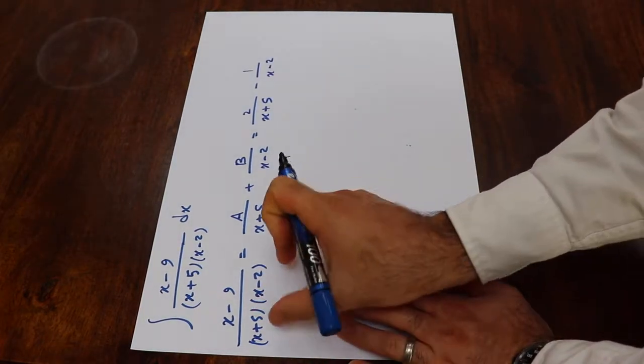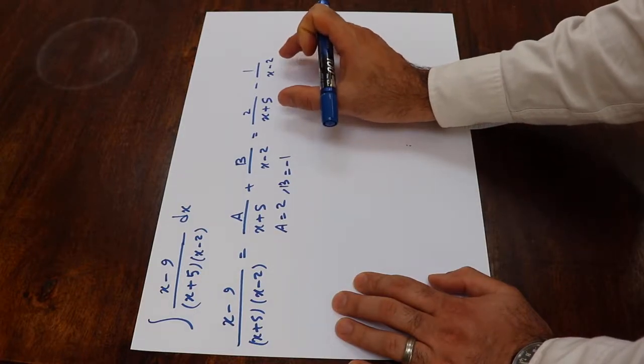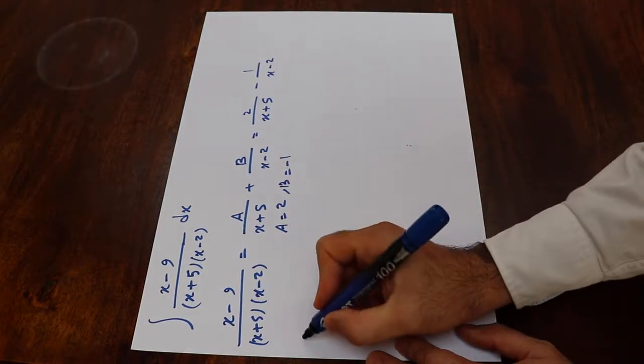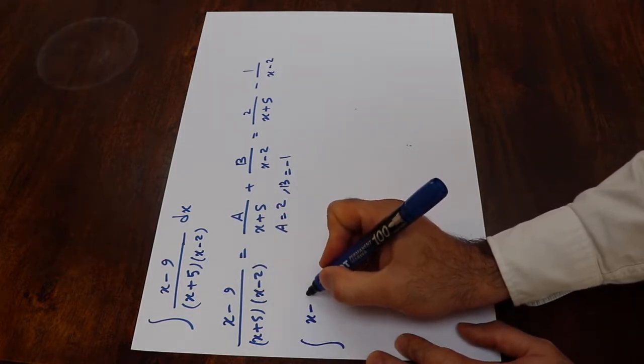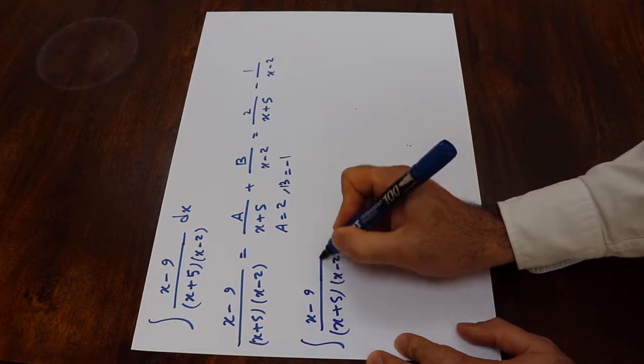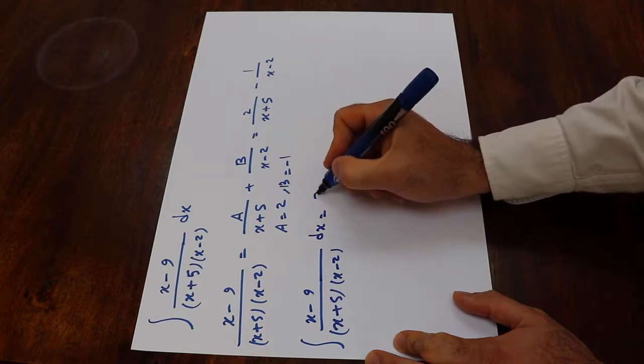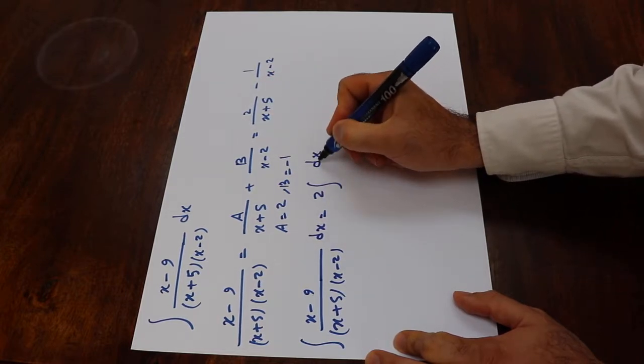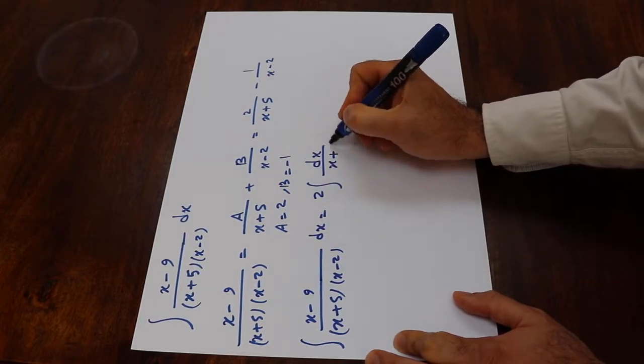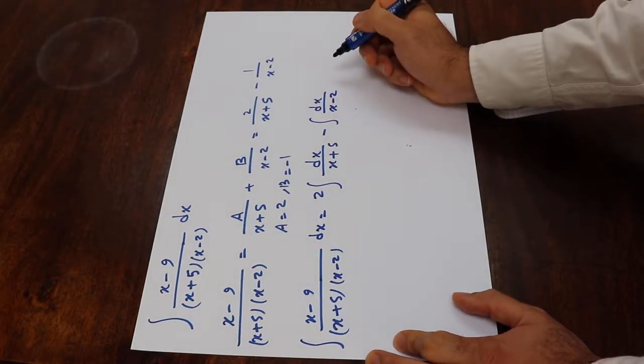This integral, the integral of this rational function will be the integral of these partial fractions. Therefore, the integral of x minus 9 divided by x plus 5 times x minus 2 dx will be equal to—2 is constant, so I take it out of the integral—integral of dx over x plus 5 minus integral of dx over x minus 2.